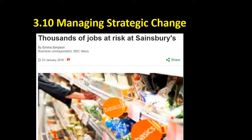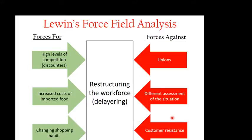Let's have a look at an example to bring this home. This is a relatively recent headline from the BBC website about thousands of jobs being at risk at Sainsbury's. It's basically a story about the restructuring of the workforce at Sainsbury's — restructuring some of the management, de-layering, taking out a layer of management in order to cut costs. These are some of the forces for that change.